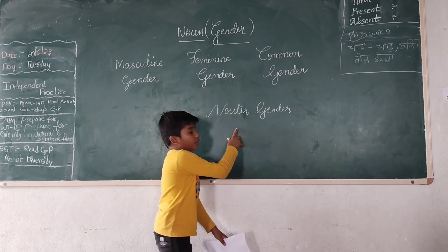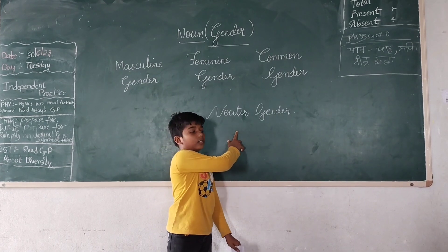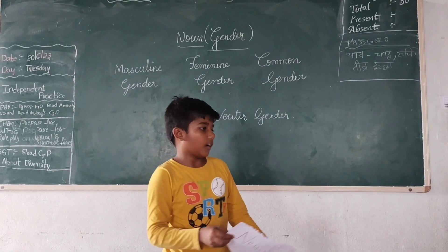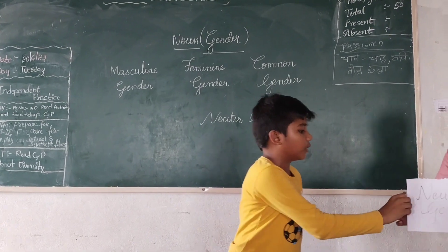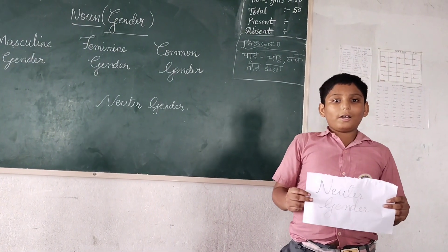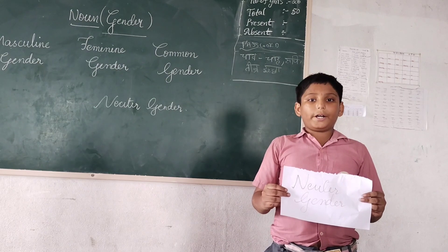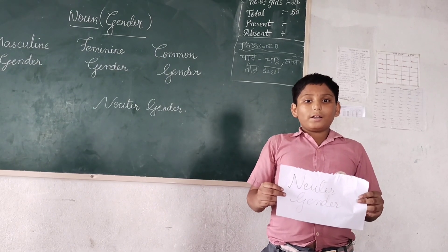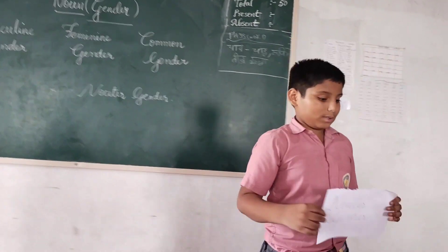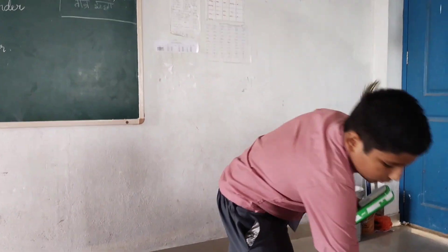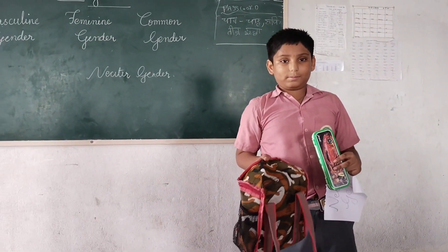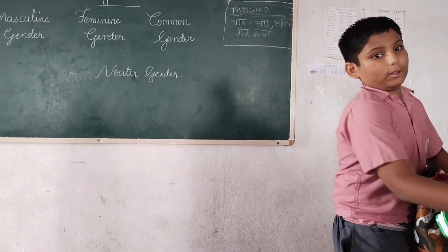This is neuter gender. This is explained by Akhle Eswar. All lifeless things come under neuter genders. For example, geometry, bag, and water are neuter genders.